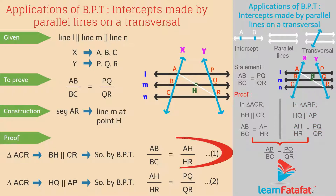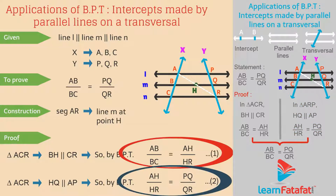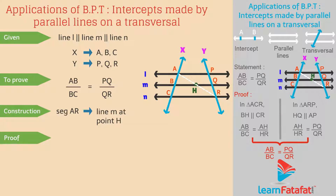Finally, from relations 1 and 2, we get AB divided by BC is equal to PQ divided by QR. Hence proved.